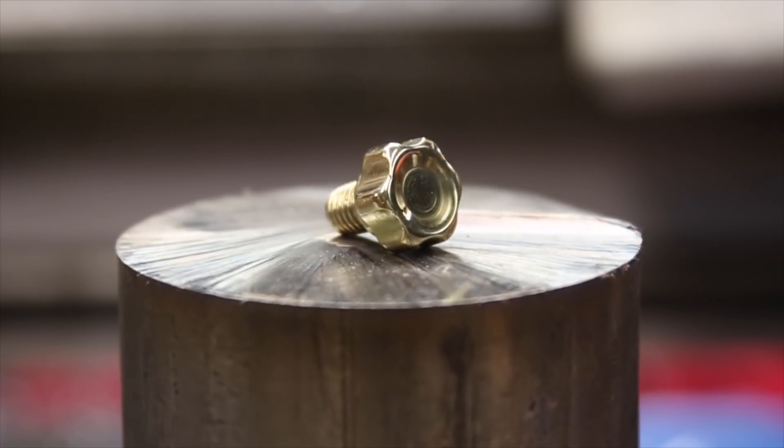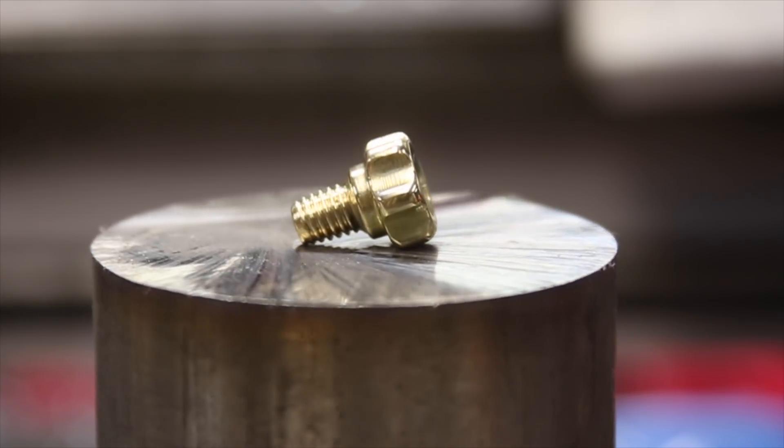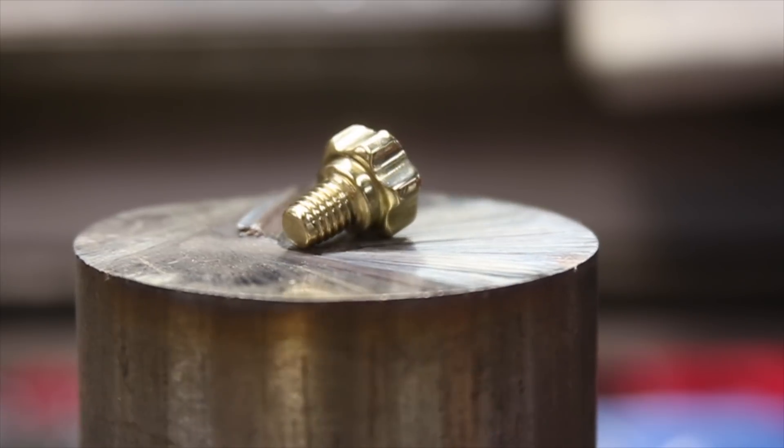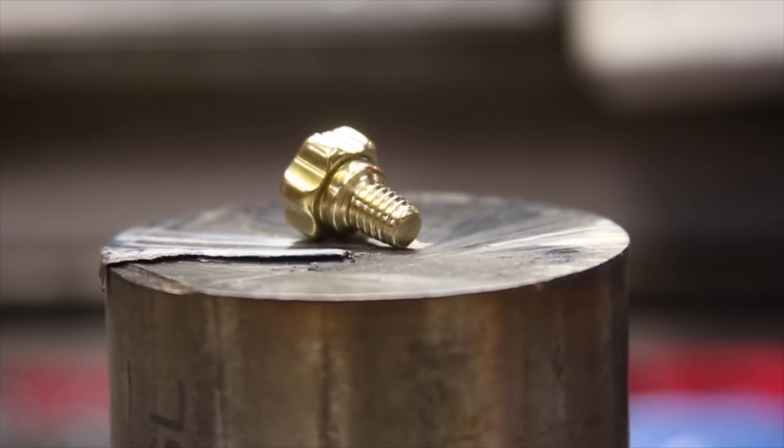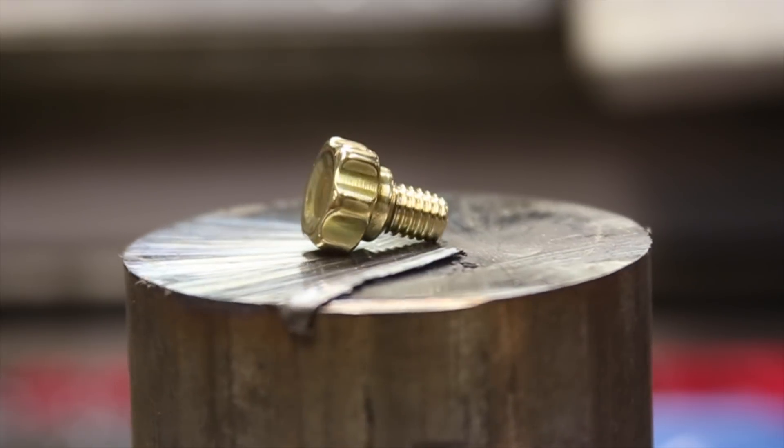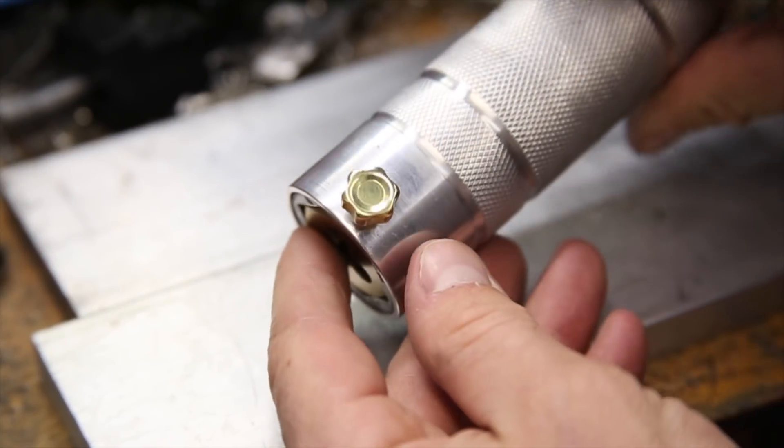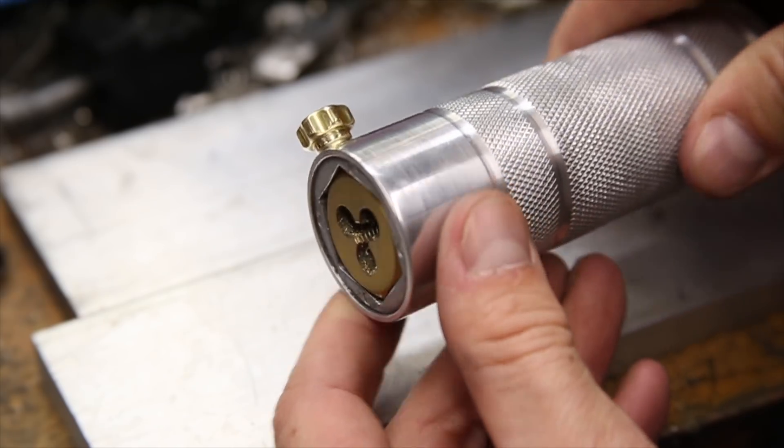And that's it, a really fantastic looking and functional thumb set screw to hold the thread dies in the holder of the tailstock hex die holder handle. Finally, a quick test proves that this set screw is going to work as nicely as it looks.